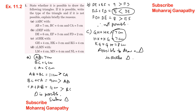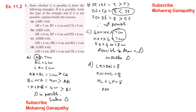Part D (triangle LMN): LM plus MN = 8 cm, MN plus NL = 8 cm, NL plus LM = 8 cm. All sides are equal, so triangle is possible and it forms an equilateral triangle.